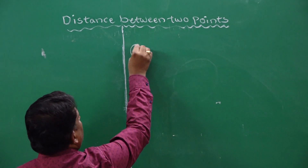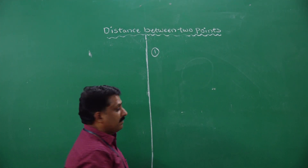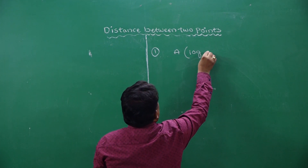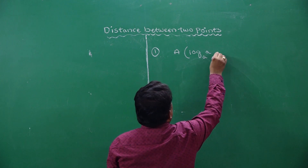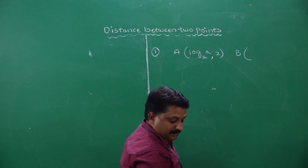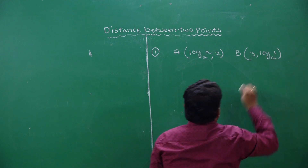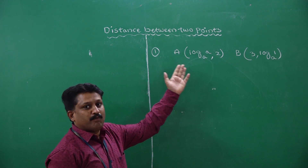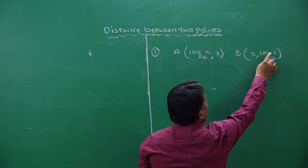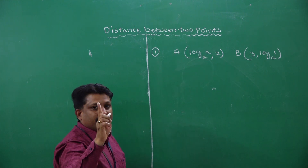Now we will discuss some problems related to distance between 2 points. The first problem is: find the distance between the 2 points A(log A to the base A, 2) and B(3, log 1 to the base A). Here, log A to the base A value is 1.